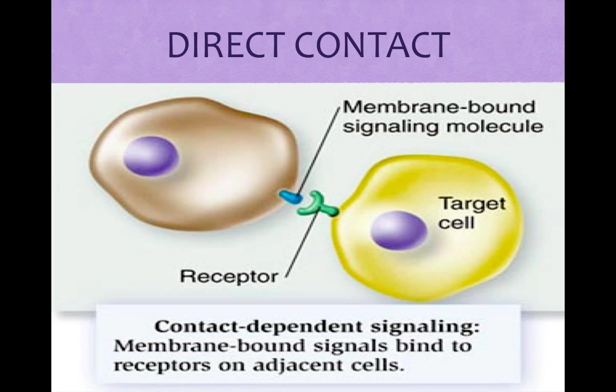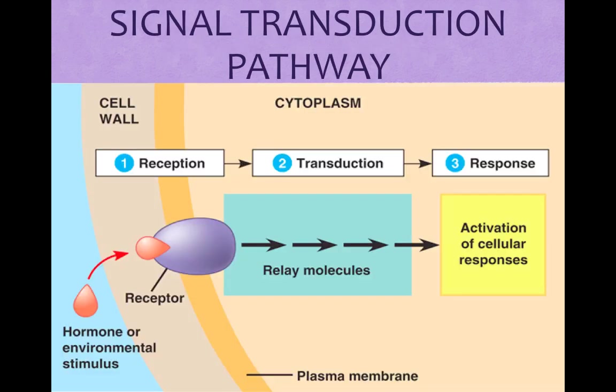When a cell receives a signal, it must be recognized by a specific receptor molecule. The information is then changed into another form, which is transduced, before the cell can respond. Earl W. Sutherland won the Nobel Prize in 1971 for work on chemical messages via signal transduction.